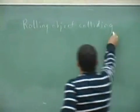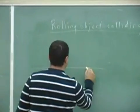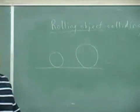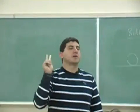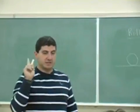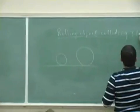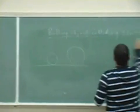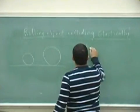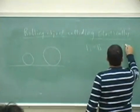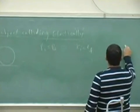So rolling objects colliding. Now with this one, what ends up happening, let's say it's like two different size. What ends up happening is that the angular momentum of the collision is not conserved.